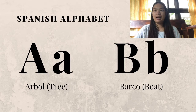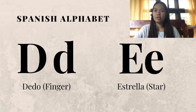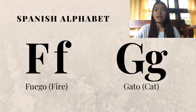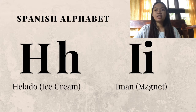A — Arbol. B — Barco. C — Cama. Che — Chaleco. D — Dedo. E — Estrella. F — Fuego. G — Gato. H — Helado.